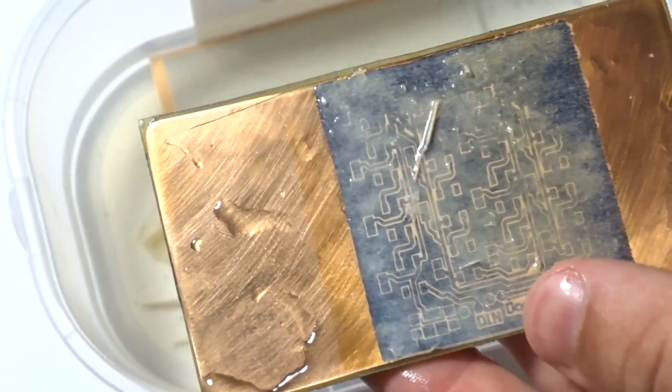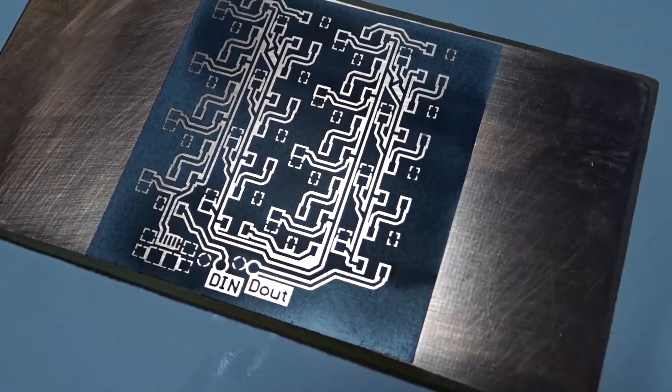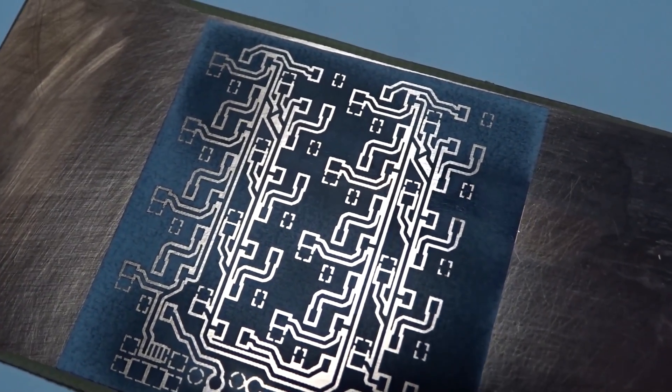Now this is the time where you have to inspect your board before doing the etching process. In my case everything looked nice and I didn't need to use any sharpie to fix it.